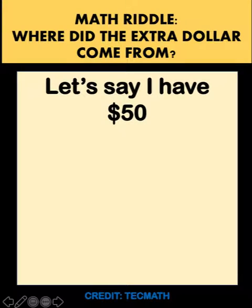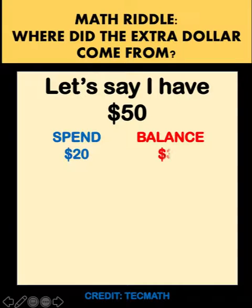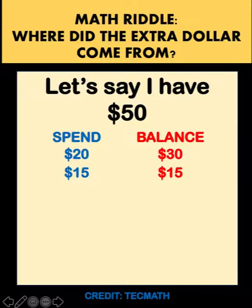Let's say I have $50 and I recorded the amount I spent and my balance. Let's say I spent $20, my balance therefore would be 50 minus 20 equals $30. Then from the $30, I spent $15, my balance would be $15. And then I spent $9,